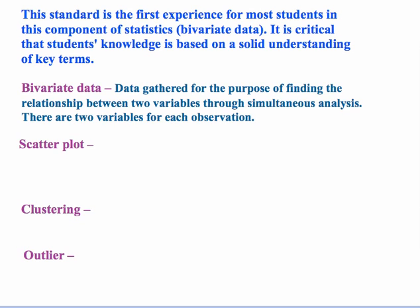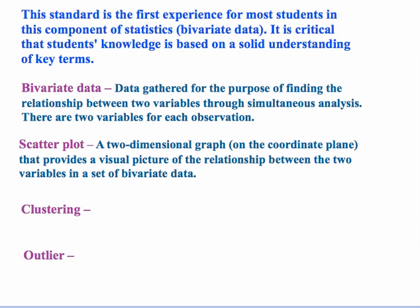Bivariate data is data gathered for the purpose of finding the relationship between two variables through simultaneous analysis — there are two variables for each observation. A scatter plot is a two-dimensional graph on a coordinate plane where you plot the data points, providing a visual picture of the relationship between the two variables in a set of bivariate data.